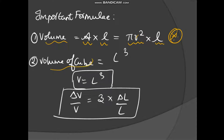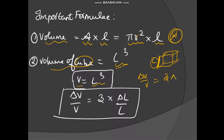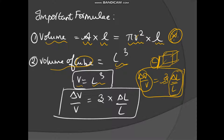The volume of a cube is L³ — that is, for a cube of side length L, volume equals L³. So delta V by V equals 3 times delta L by L. This concept comes from units and measurement: fractional change in volume equals the power times fractional change in length. This applies for a cube only.